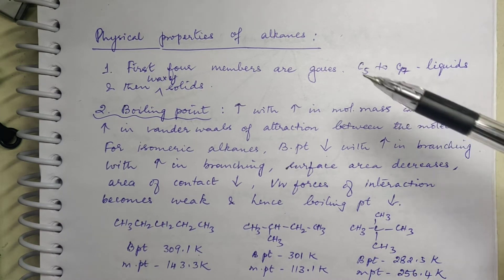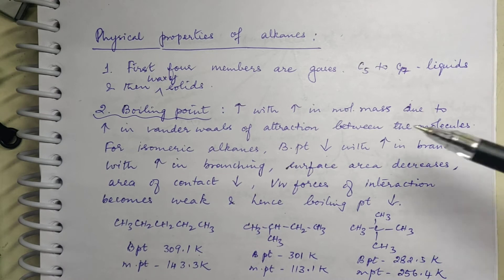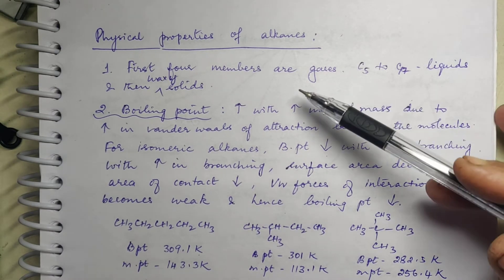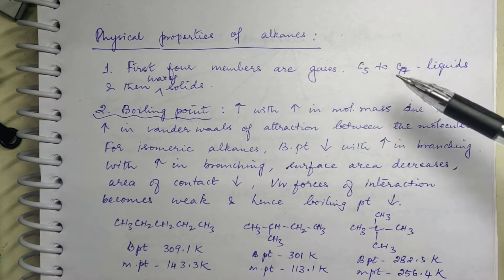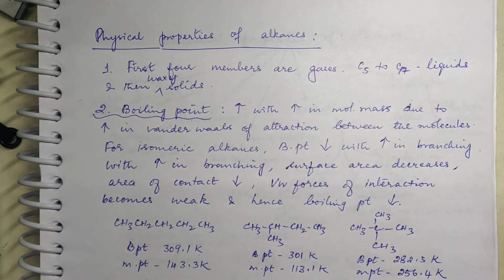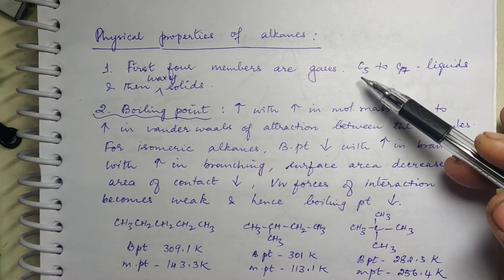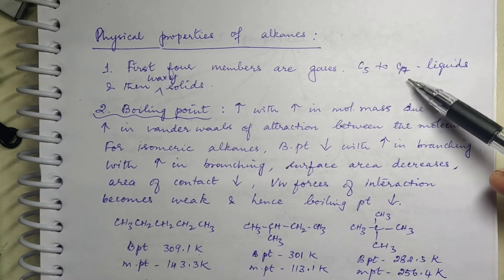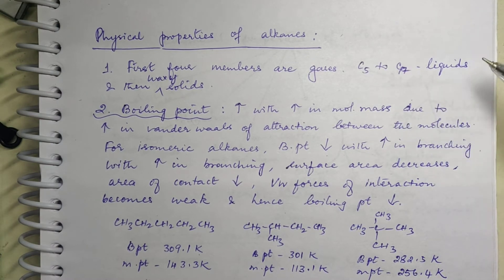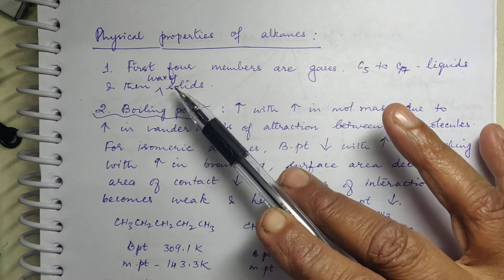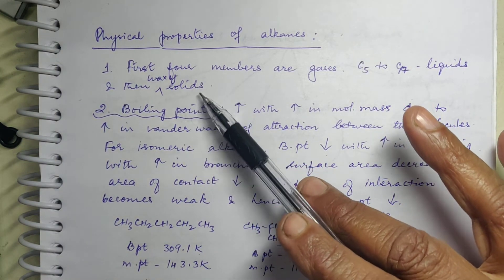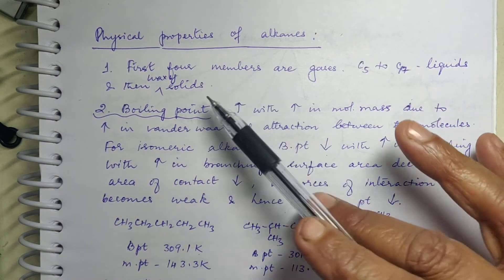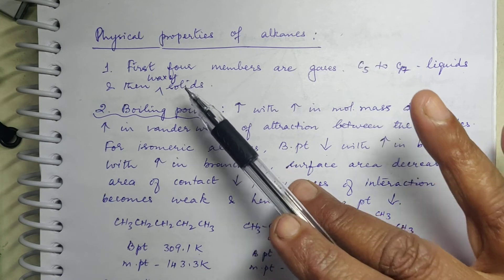Under physical properties of alkanes, the first four members are gases. The fifth member to the 17th member are liquids, and higher members are waxy solids.